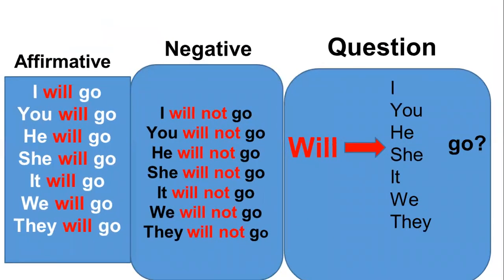So far, you have learned how to make affirmative and negative sentences. Now, let's move on to question sentences. In order to make question sentences, we place will before the subject. Will I go? Will you go? Will he go? As you see in the table, will doesn't change according to the persons.